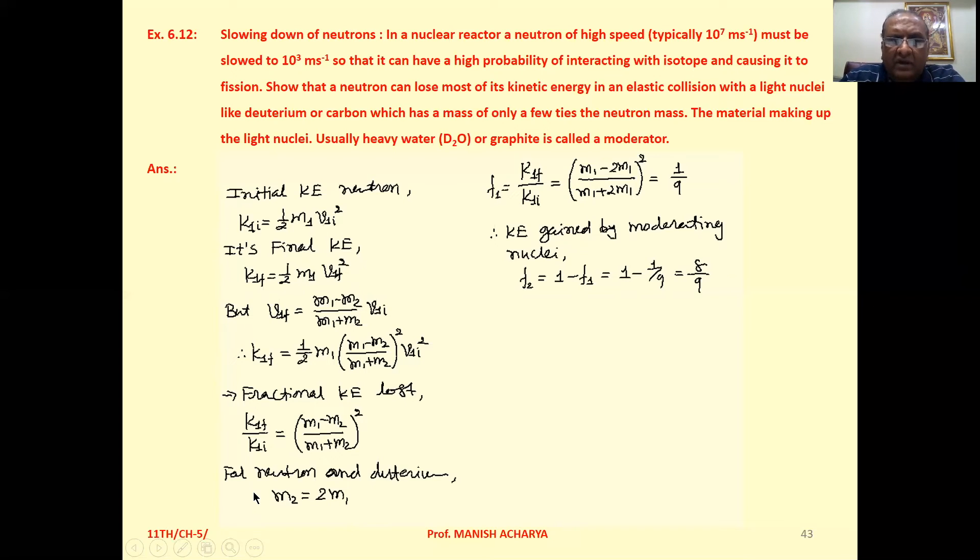Now for neutron and deuterium, mass of deuterium is 2 times mass of neutron. So we can write the fractional kinetic energy loss K₁f/K₁ᵢ with M₂ replaced by 2M₁: (M₁ - 2M₁)/(M₁ + 2M₁).